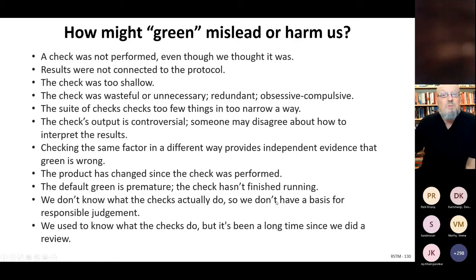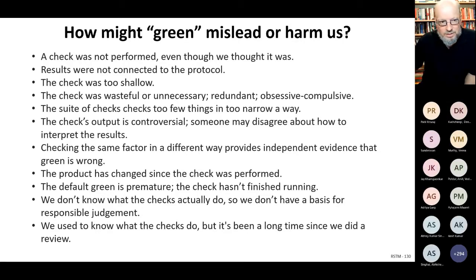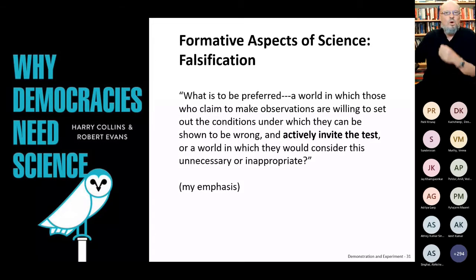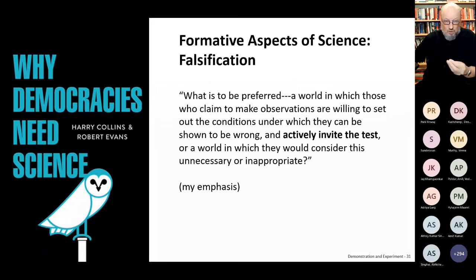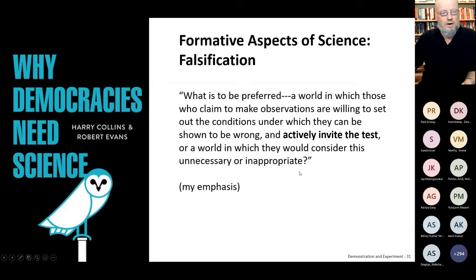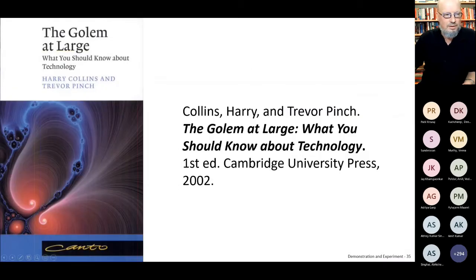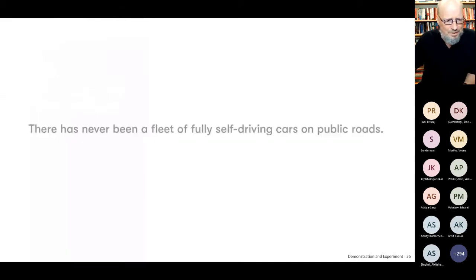The checks might have been running green and understood ages ago, but haven't been reviewed in a long time. Do we prefer a world in which those who claim to make observations are willing to set out the conditions in which they're going to be shown to be wrong — that is, are we willing to invite the test? Or do we prefer a world where that would be considered unnecessary or inappropriate? Harry talks about demonstration in his book The Golem at Large: What You Should Know About Technology. I think it's more powerful to show you a little example.